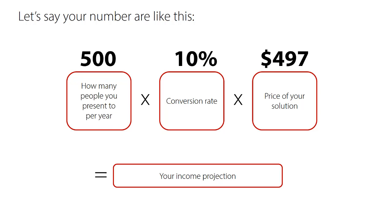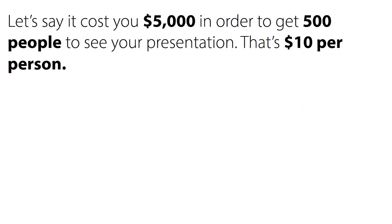I'm going to show you the conservative numbers based on a cheap $497 product — not a $1,000 or $3,000 product — and the incredible income you can generate if you follow what I'm about to teach you. The income would obviously be $24,850 if you do the equation. That's a good example — it's not an income that would literally change your life, but once you know this, it could. Now, let's say it costs you $500 in marketing to get 500 people to see your presentation — that's $10 per person.